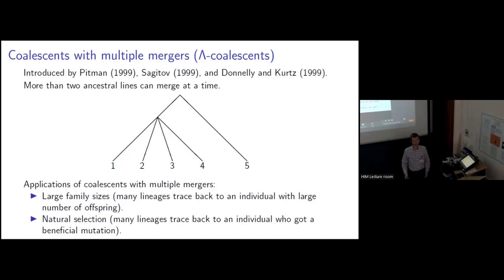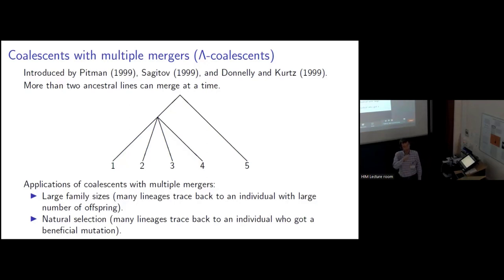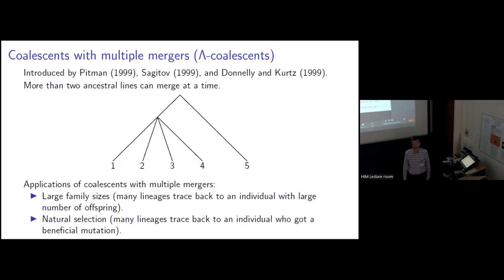When might the genealogy of a population look like this? One possibility is when we have a population with large family sizes. In that case, many ancestral lines could be traced back to one individual that had an unusually large number of offspring. A second possibility is natural selection. If a beneficial mutation appears on one individual, it could rapidly spread to a significant fraction of the population, and many ancestral lines could be traced back to the one individual that acquired the beneficial mutation. And we're going to see later that in some circumstances, dormancy could also produce a genealogy that's best described by a lambda coalescent.